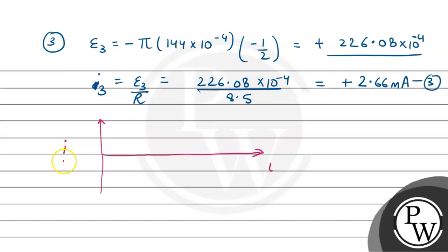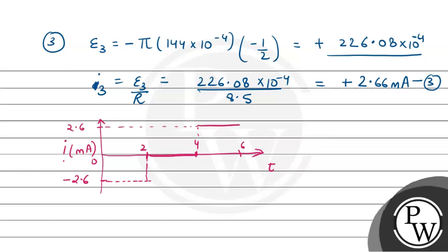Induced current versus time: In the first case, the current coming is negative — minus 2.66 milliampere — for 0 to 2 seconds. This will be a straight horizontal line since it is constant for this time period. For 2 to 4 seconds, the current is 0. For 4 to 6 seconds, the current is positive — positive 2.66 milliampere. So the plot is complete.